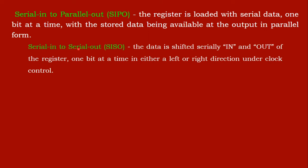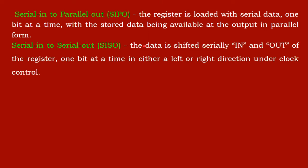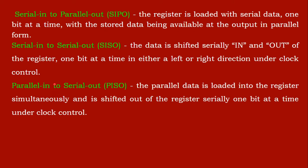Serial In Serial Out (SISO): the data is shifted in and out of the register one bit at a time, either in the left or right direction, under clock control. When the clock triggers or the clock pulse goes to the high level, this transfer takes place. It can be positive-triggered or negative-triggered clocks.